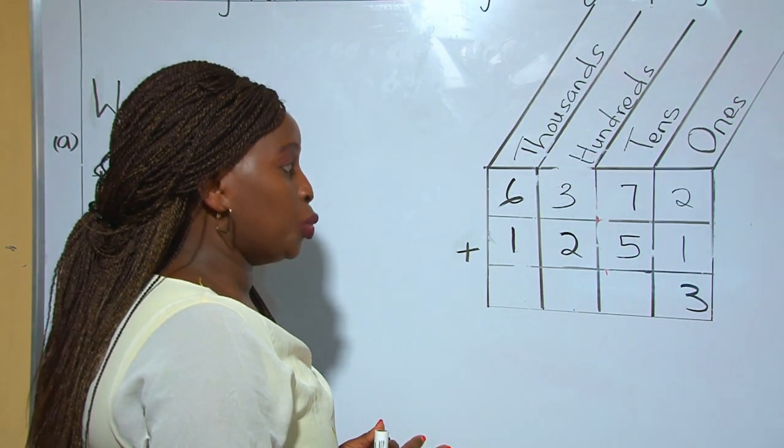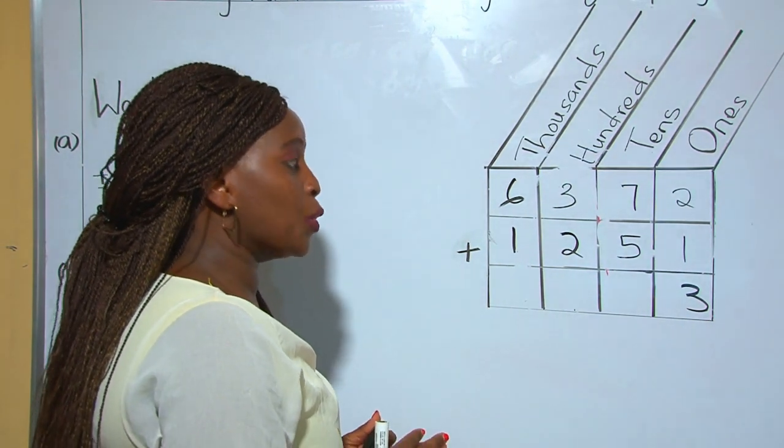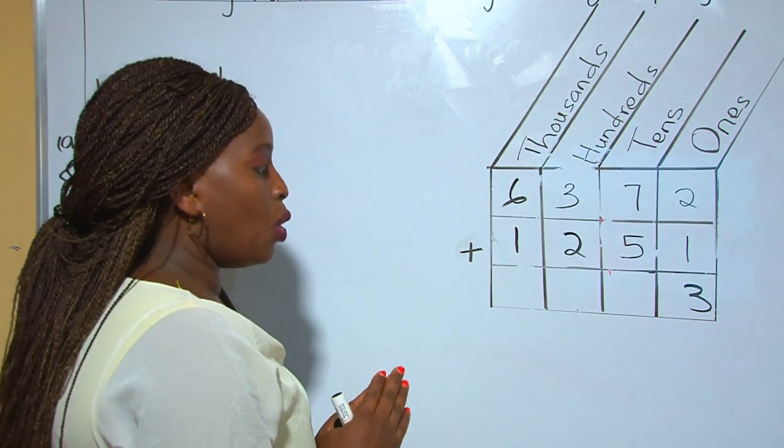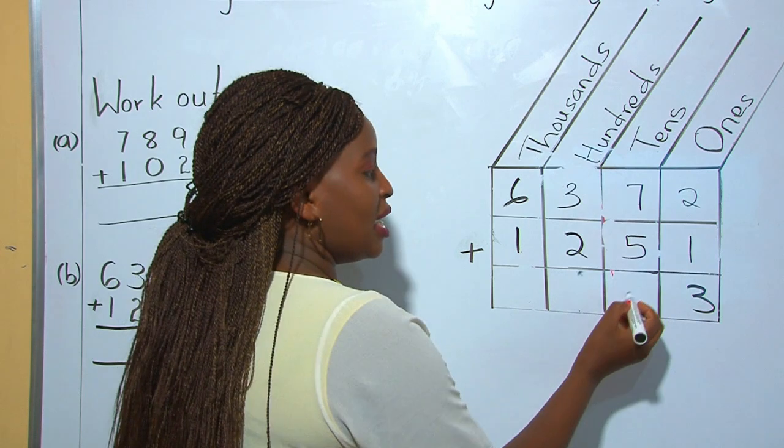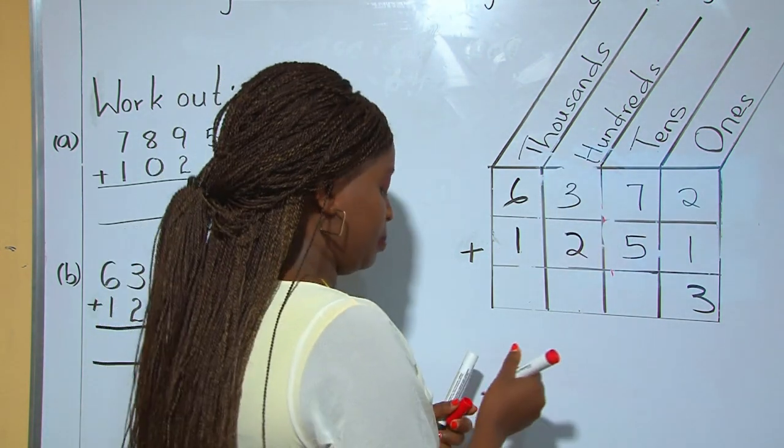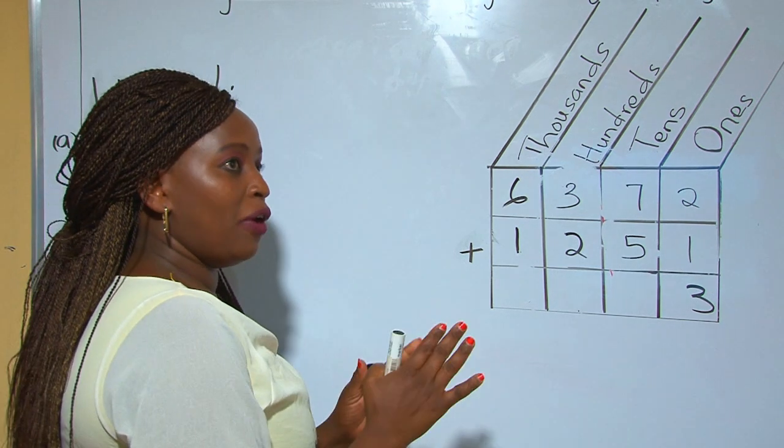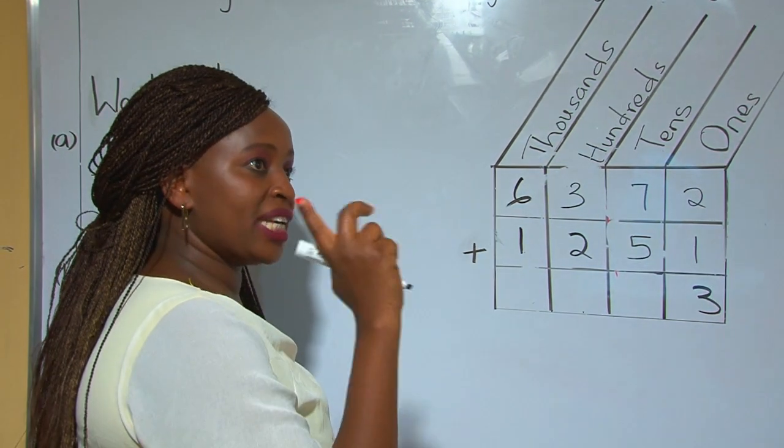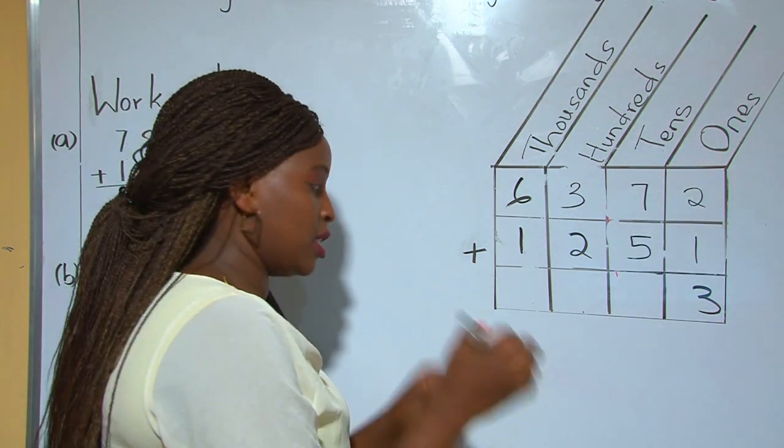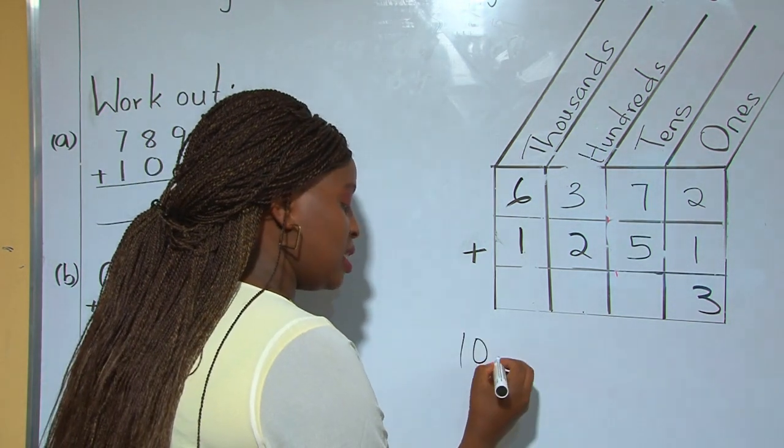12 tens. Remember, we're going to regroup these 12 tens into tens and hundreds. So why do we write 2 here and carry 1? Where does this 1 come from? We have 12 tens, and 10 tens make 1 hundred. In 12 tens, we have 10 tens that we can regroup.